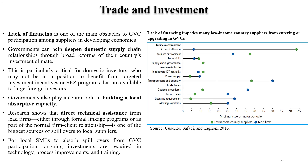Government can play a crucial role in bringing the two groups of companies — small players and lead firms — together and can help in developing and hand-holding programs. Research shows that direct technical assistance from lead firms, either through formal linkage programs or as part of the normal firm-client relationship, is one of the biggest sources of spillovers to local suppliers. It is very important that government can also play an important role in building the local absorptive capacity, bringing these two groups of companies together. For local SMEs to absorb the spillover from GVC participation, ongoing investments are required in technology, process improvements, and skill development.